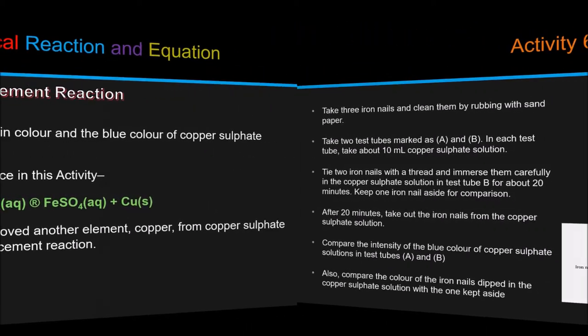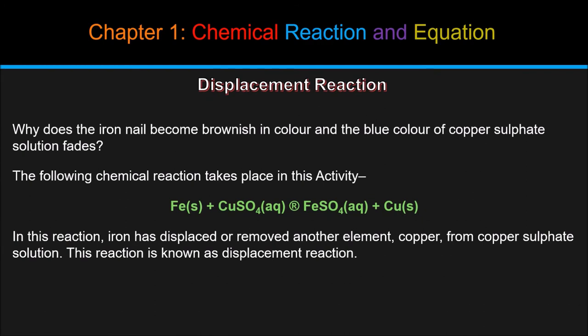In displacement reaction, can you guess why does the iron nail become brownish in color and the blue color of copper sulfate solution fades? To know the answer, we need to go through the chemical equation formed by this reaction. Fe(S) plus CuSO4(AQ) equals FeSO4(AQ) plus Cu(S). In this reaction, iron has displaced or removed another element, copper, from copper sulfate solution. This reaction is known as displacement reaction.